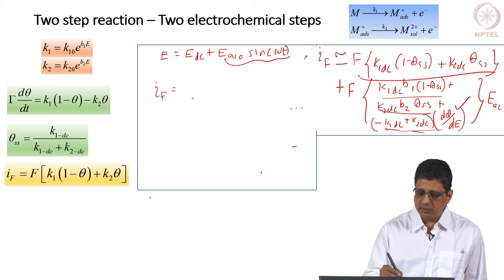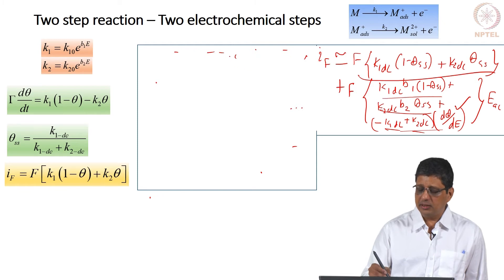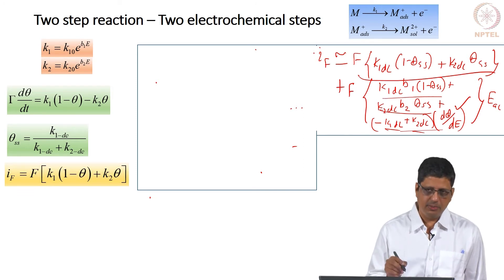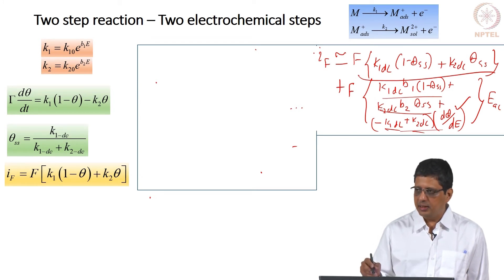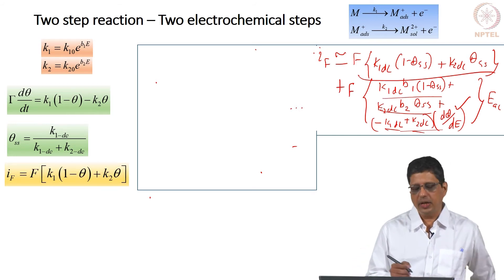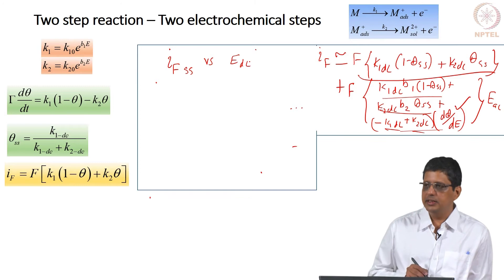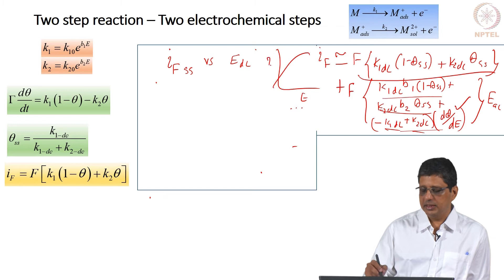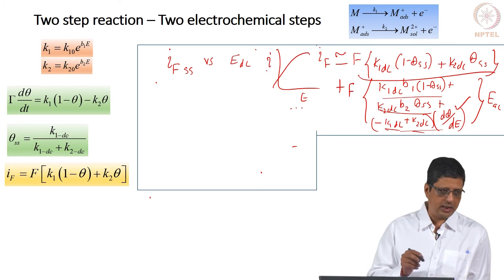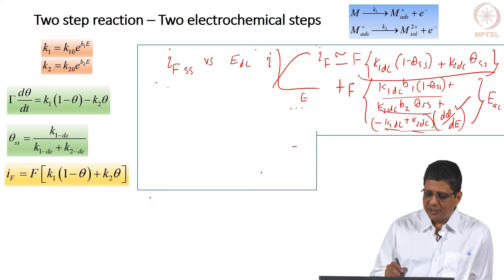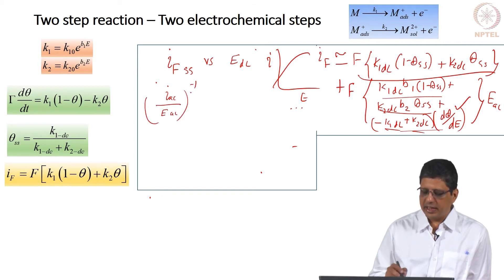In the electrical circuit analogy, we just take the impedance and see if we can model it with a circuit, but we never worried about the DC current. There is a difference between taking the DC current and taking the impedance at zero frequency. The DC current is current as a function of E. When solution resistance is negligible and capacitance blocks DC, total current equals faradaic current. Faradaic admittance is I_AC / E_AC, and faradaic impedance is the inverse.